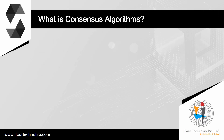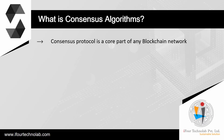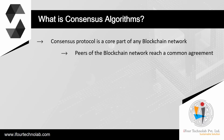The consensus protocol is a core part of any blockchain network. Blockchain is a distributed decentralized network that provides immutability, privacy, security, and transparency. There is no central authority present to validate and verify the transactions, yet every transaction in the blockchain is considered to be completely secured and verified. This is possible only because of the presence of the consensus protocol, which is a core part of any blockchain network.